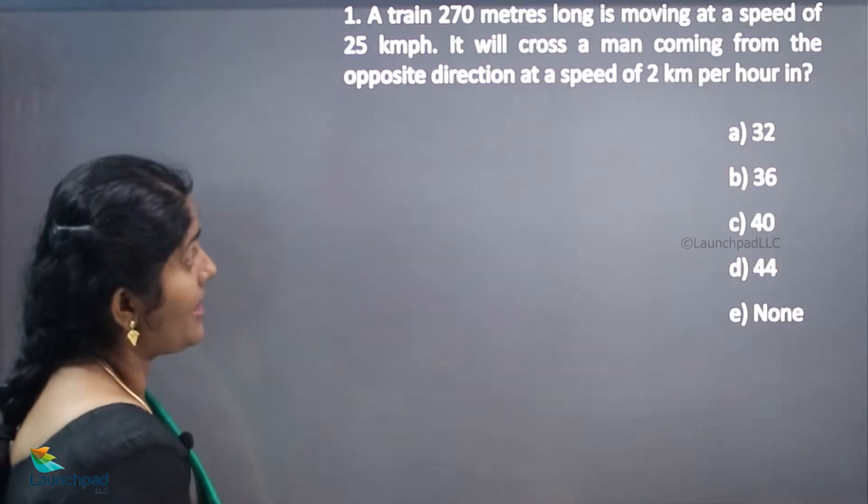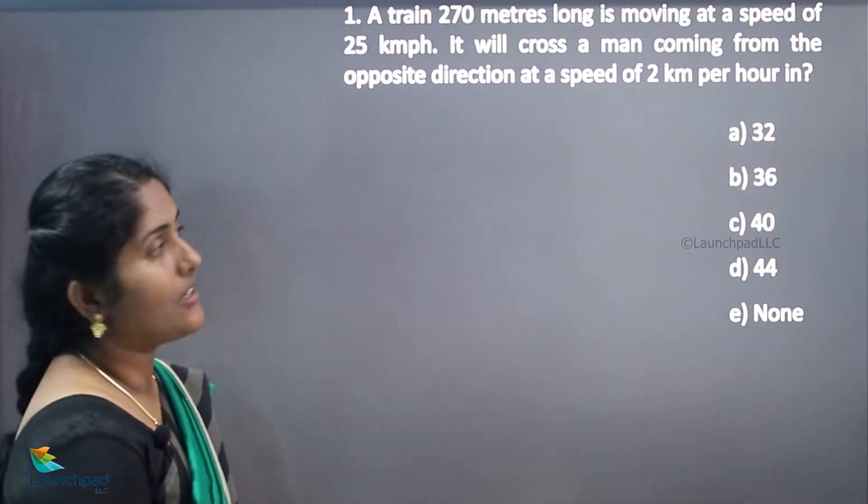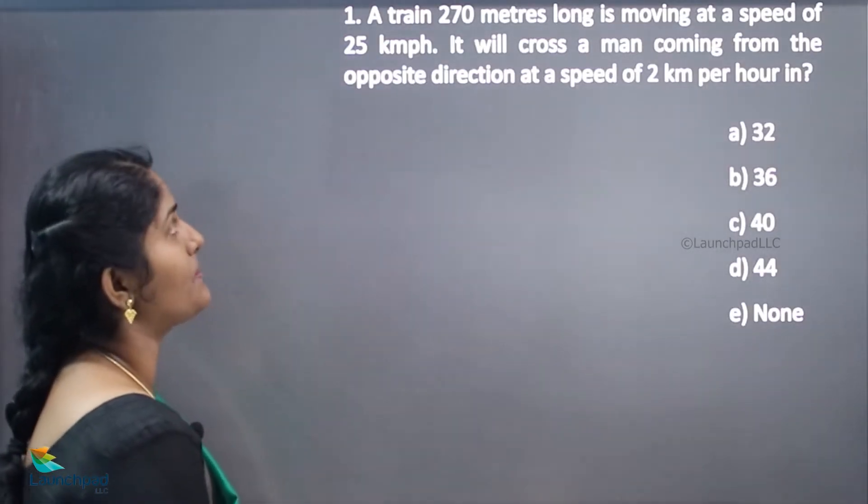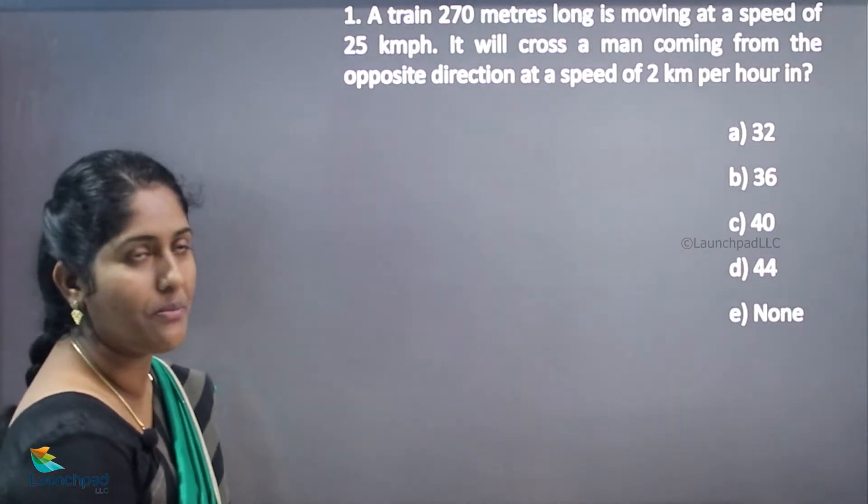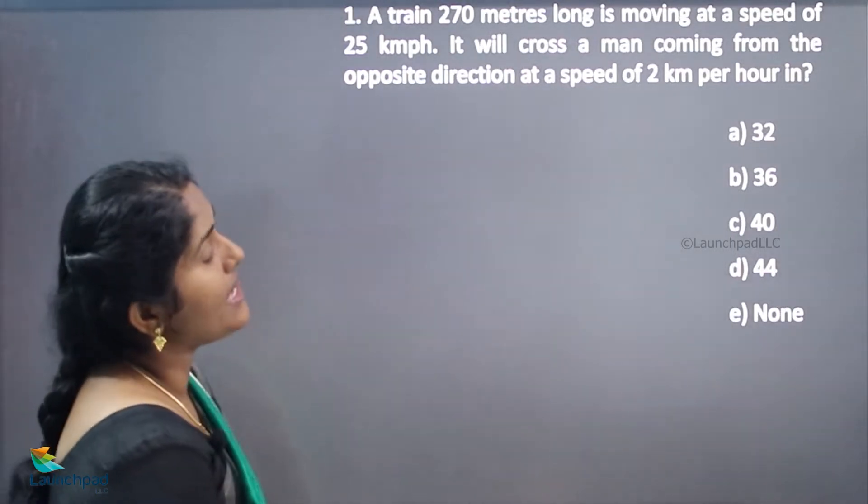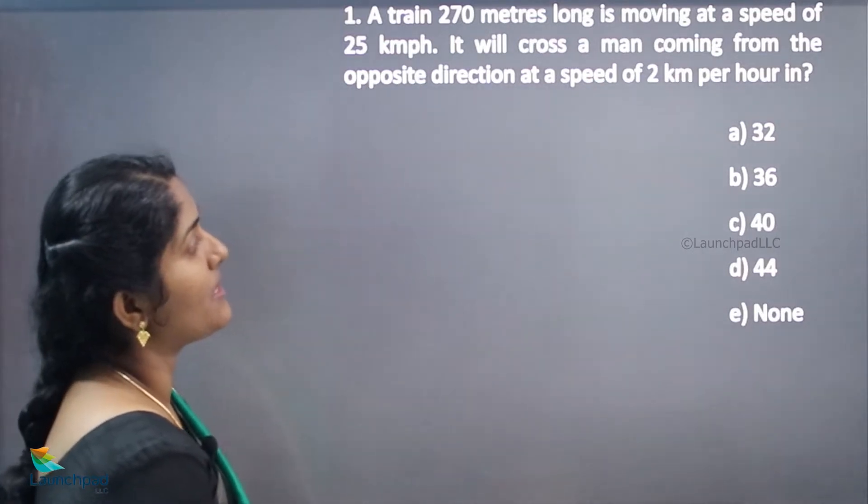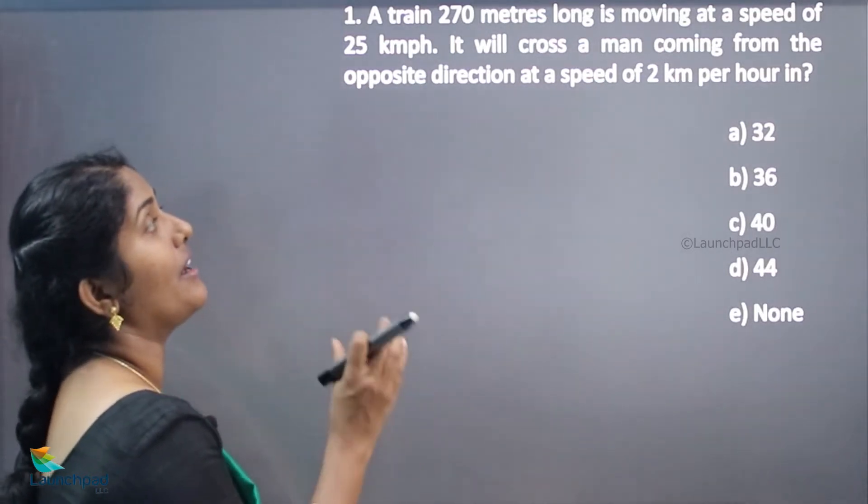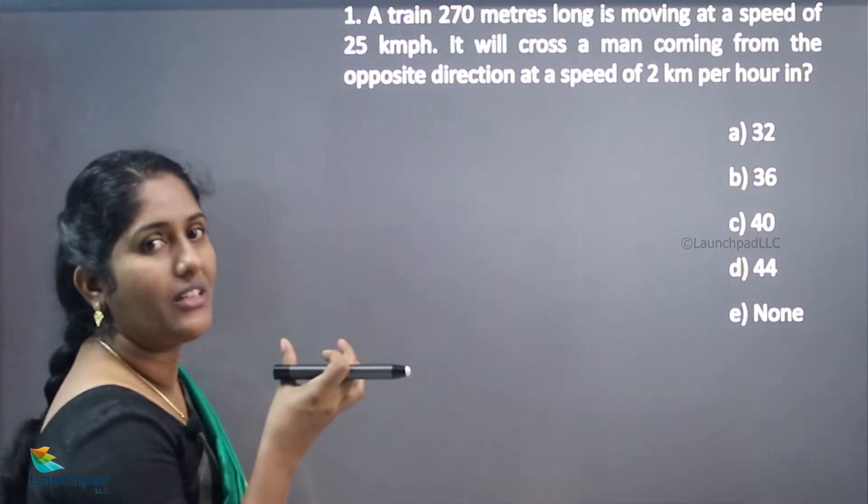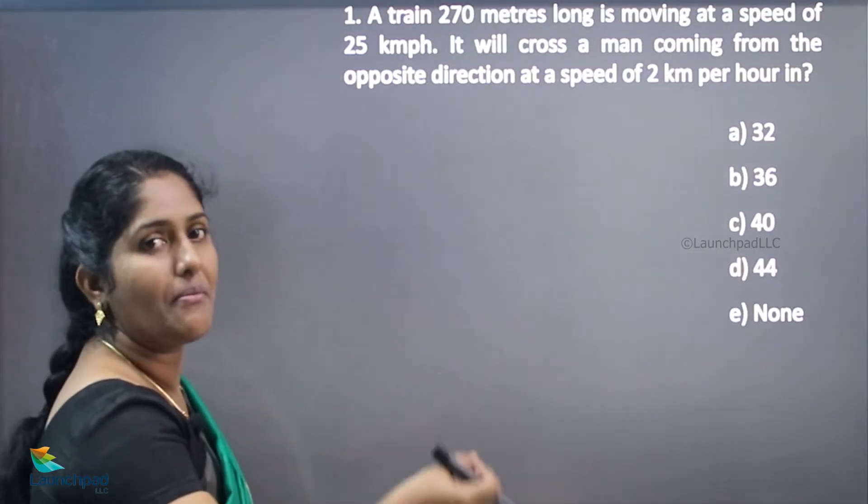Hello everyone, in this video we are going to see the next type of problems on trains. Let's see the question. A train 270 meters long is moving at a speed of 25 kilometers per hour. It will cross a man coming from the opposite direction at a speed of 2 kilometers per hour. In how long will the train take to cross the man?